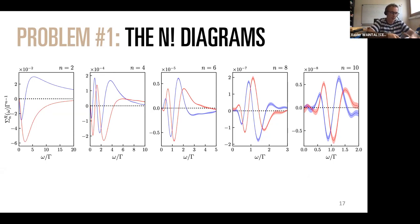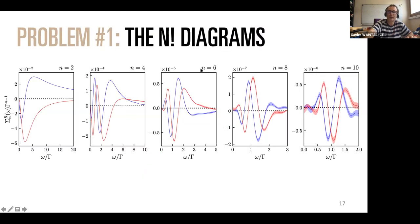This gives you an idea of the raw output: we calculate the self-energy as a function of frequency at order 2, 4, 6, 8, and 10. The scale here goes from 10^{-2} at order 2 down to 10^{-8} at order 10 — so the coefficients become very tiny, yet we can calculate them nevertheless even with some error bars.